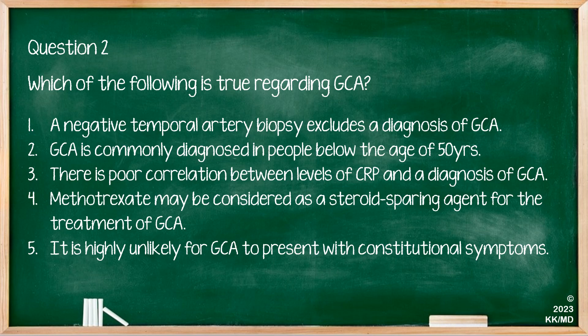Question 2: Which of the following is true regarding GCA? 1) A negative temporal artery biopsy excludes a diagnosis of GCA. 2) GCA is commonly diagnosed in people below the age of 50. 3) There is a poor correlation between CRP levels and a diagnosis of GCA. 4) Methotrexate may be considered as a steroid-sparing agent for GCA. 5) It is highly unlikely for GCA to present with constitutional symptoms.